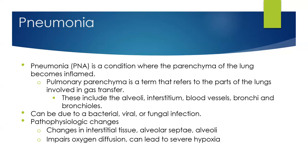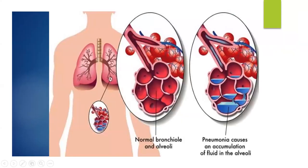This photo demonstrates the location of pneumonia. On the left, you can see the normal bronchiole and alveolus with a real thin membrane — that's where gas exchange happens. On the right, with pneumonia, there is infection, and with infection comes pus, fluid, and inflammation. When all that happens around that membrane, it thickens it and makes it harder for gas exchange to occur. The fluid impairs the shape of the alveolus.